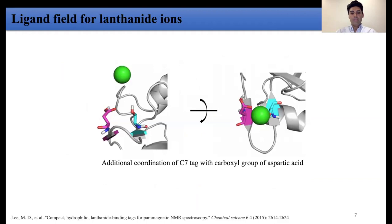The ligand field for lanthanide ions can also make a big difference. As shown in this figure, the additional coordination of a C7 tag — which is a lanthanide binding tag — with the neighboring carboxyl group of aspartic acid can produce an unusually large delta chi tensor for this tag. It has also been recorded that the delta chi tensor of some lanthanide ions is pH sensitive as well. So the ligand field is actually quite important for paramagnetic metal binding sites.